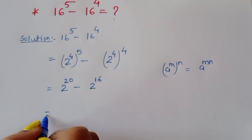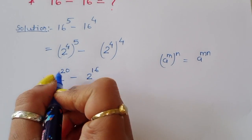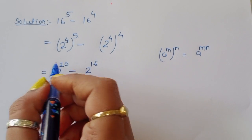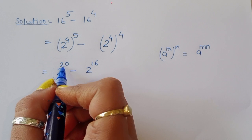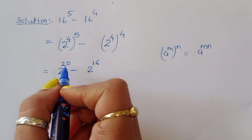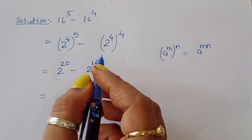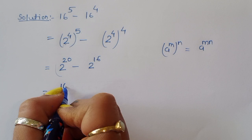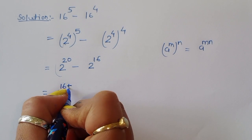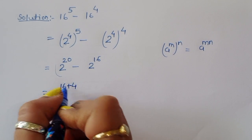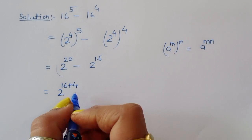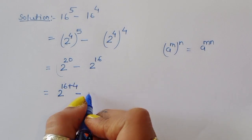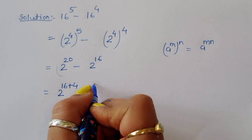Now, 2 power 20 — we can convert 20 in the form of 16. So 20 is 16 plus 4. We write this as 2 power 16 plus 4, minus 2 power 16.